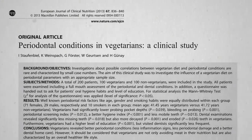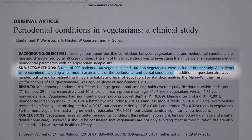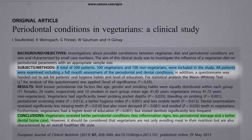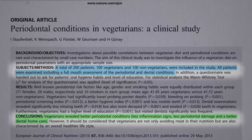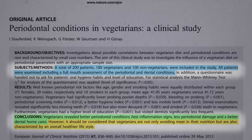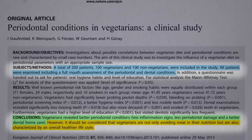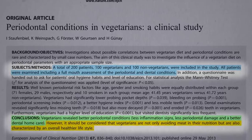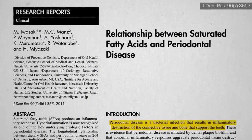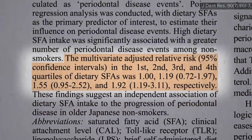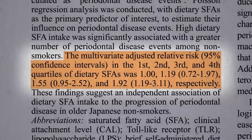What about periodontal conditions in vegetarians? A hundred vegetarians versus non-vegetarians were studied, and those eating vegetarian did have better periodontal conditions — less inflammation signs, less periodontal damage, and better dental home care. However, it should be considered that vegetarians may not just be avoiding meat, but are healthier in other ways. But do people who eat more saturated fat get more periodontitis? About double the risk at the highest levels of intake, and this study was in Japan, where they eat less than half the meat and dairy compared to the U.S.